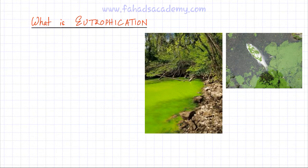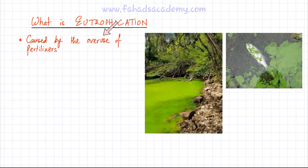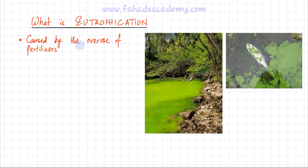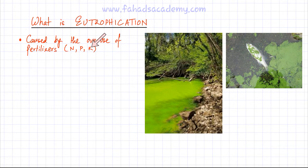The leading cause of eutrophication is the overuse of fertilizers. These fertilizers are the main culprits that farmers use to improve crop yield, because they provide the necessary ingredients for crop growth. The necessary ingredients that crops need are nitrogen, phosphorus, and potassium, so NPK fertilizers are the main culprits. These elements N, P, and K are delivered to plants in the form of salts.